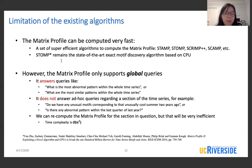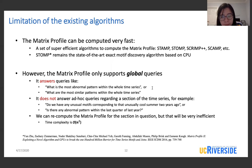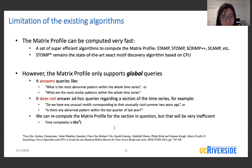However, the matrix profile only supports global queries. So it can answer queries like what is the most abnormal pattern within the time series, or what are the most similar patterns within the whole time series. It does not answer ad hoc queries regarding a section of the time series. For example, do we have any unusual motifs corresponding to that unusually cool summer two years ago? Or is there any abnormal pattern within the last quarter of last year? We can recompute the matrix profiles for the section in question, but that will be very inefficient.